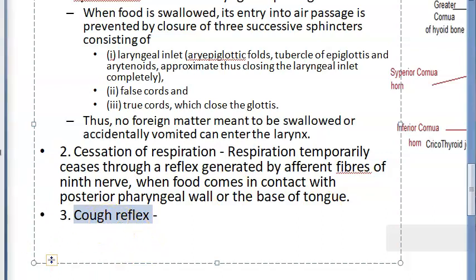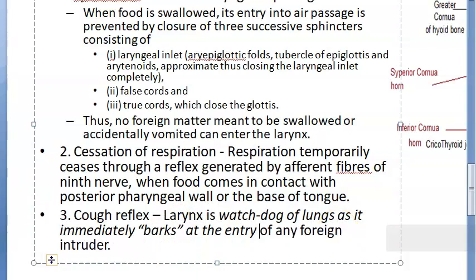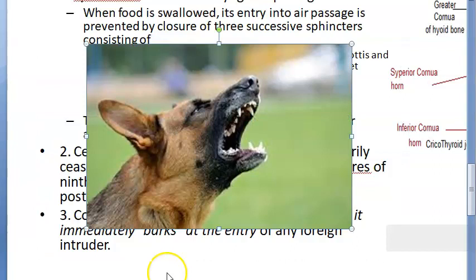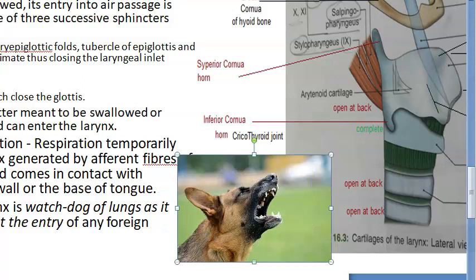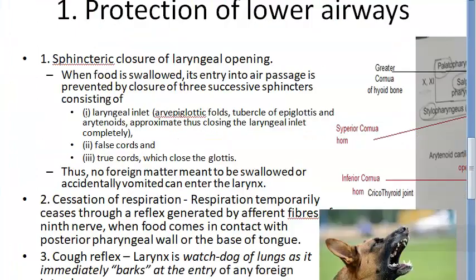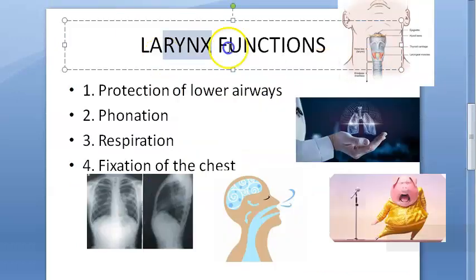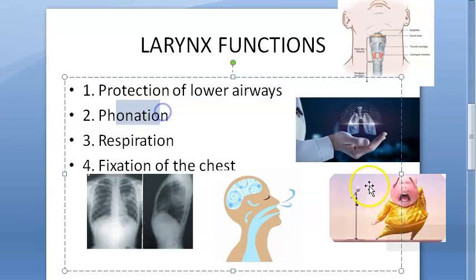The cough reflex is a very important and powerful mechanism to dislodge and expel a foreign particle that comes in contact with the respiratory mucosa. That is why the larynx is called the 'watchdog of the lungs' — it immediately barks at the entry of any foreign intruder. So if a foreign particle contacts the respiratory mucosa, coughing occurs immediately. That completes the first function: protection of lower airways.